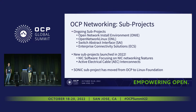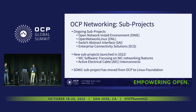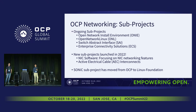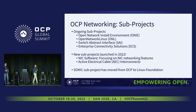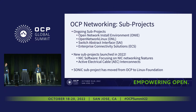Here are some sub-projects we've had for the last few years. Open Network Install Environment — ONI — is software that helps install the networking OS onto switches and routers. Open Networking Linux has been standardizing platform management interfaces across a variety of platforms. Switch Abstract Interface is an open API to control and configure switches. And ECS, Enterprise Connectivity Solutions, focuses on solutions and products for enterprise deployments, whose requirements vary from data center deployments.